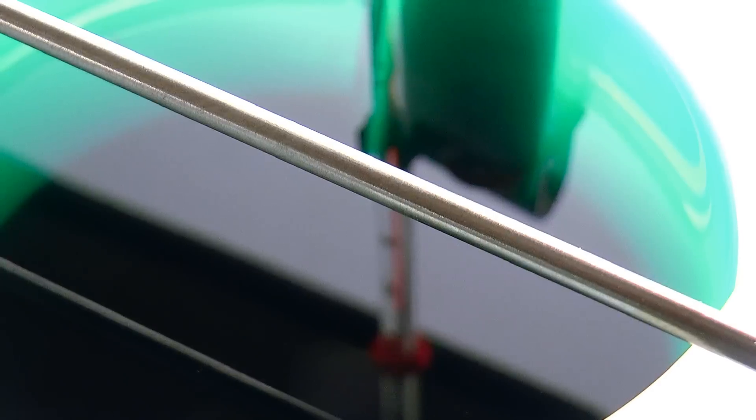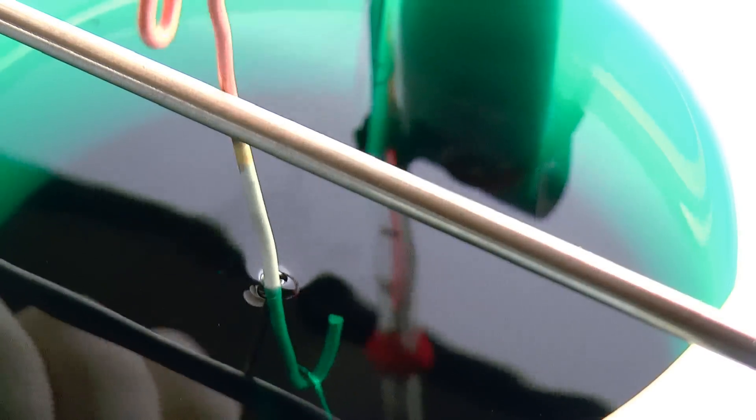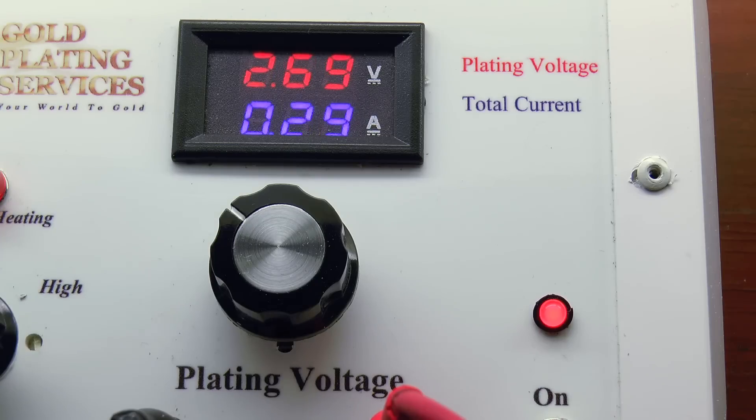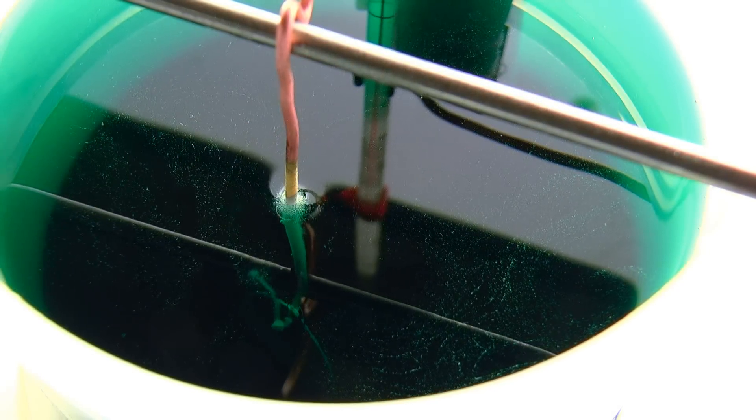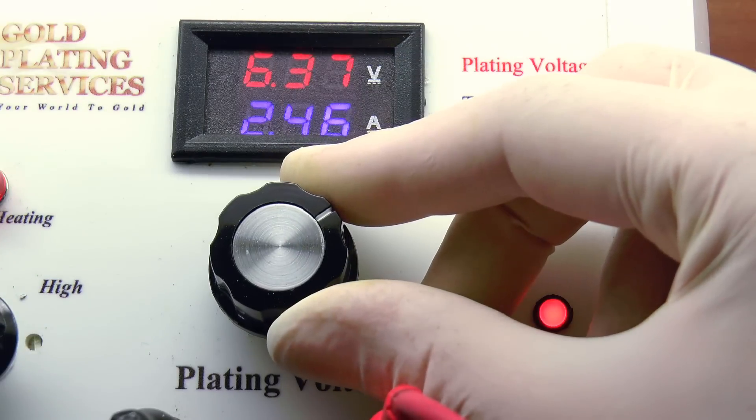Plating voltage also plays a role. Generally speaking it controls the rate of deposition, with a lower voltage meaning a slower deposition rate and potentially a smoother surface, and a higher voltage delivering a much more vigorous plate.